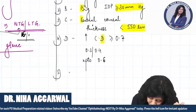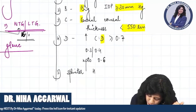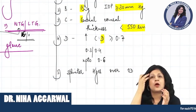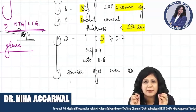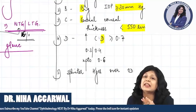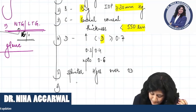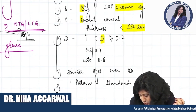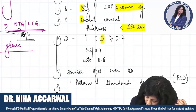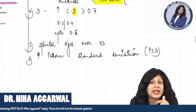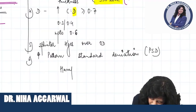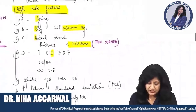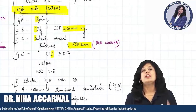Number five: splinter hemorrhages over the optic disc. That is a sign of raised intraocular pressure going much beyond, causing capillary leaks and hemorrhages. Number six is pattern standard deviation (PSD). If the PSD is increased — this is obtained on the Humphrey's analyzer — that is also a high risk factor. These are the six high risk factors, which are always asked in exams.